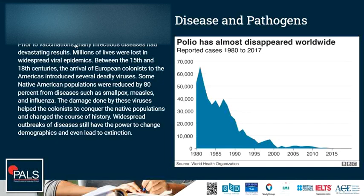Widespread outbreaks of disease still have the power to change demographics and even lead to extinction. But vaccines can help to prevent such events. For example, the polio vaccine has almost eradicated polio worldwide — from very high numbers in the 1980s to almost no infections in 2018.